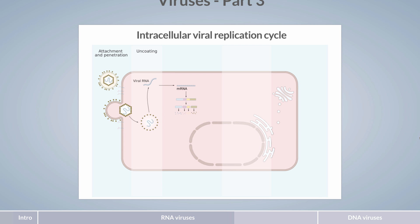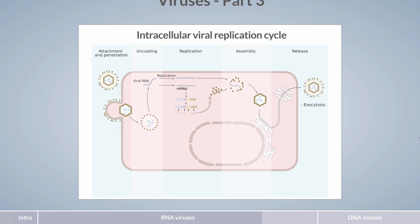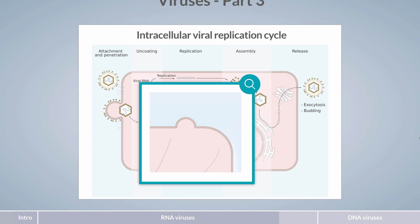Structural proteins required to form new capsids are subsequently produced and accordingly named late proteins. These proteins need to be produced in large quantities. Once RNA replication and protein production have yielded a sufficient amount of viral components, self-assembly into a new virion takes place. There are three different pathways involved in the release of new virions. Particles travel through the endoplasmic reticulum and Golgi apparatus in order to undergo exocytosis. Another mechanism often observed is the release of viruses by budding, where viral proteins are incorporated into the host membrane, which the virion later acquires as its final envelope.